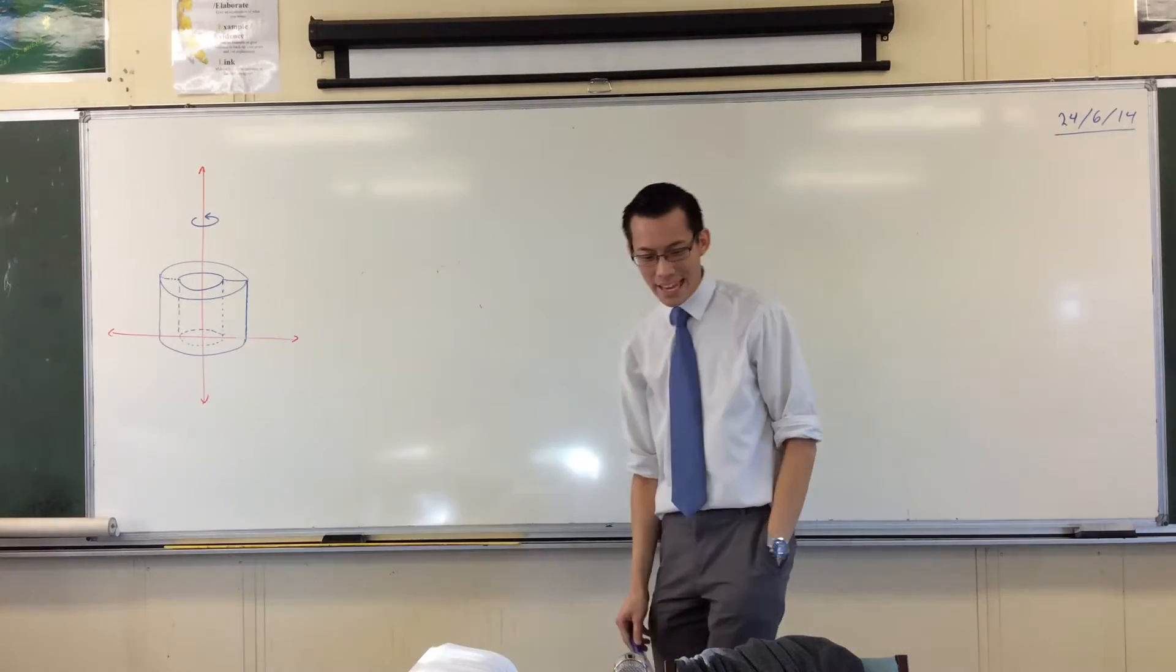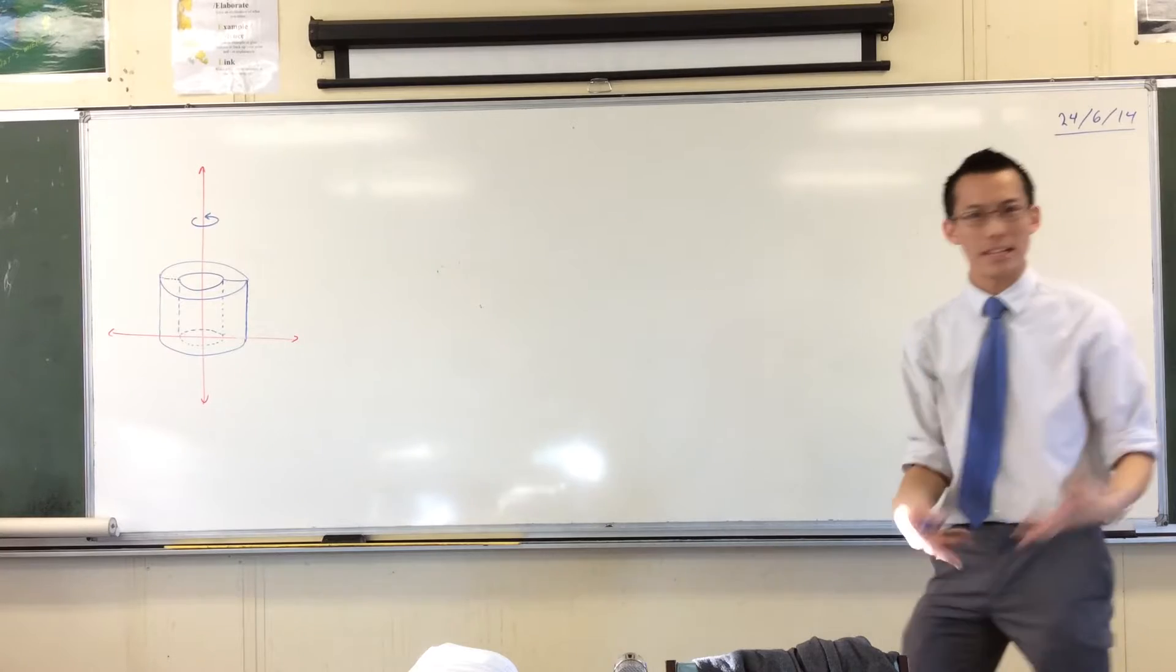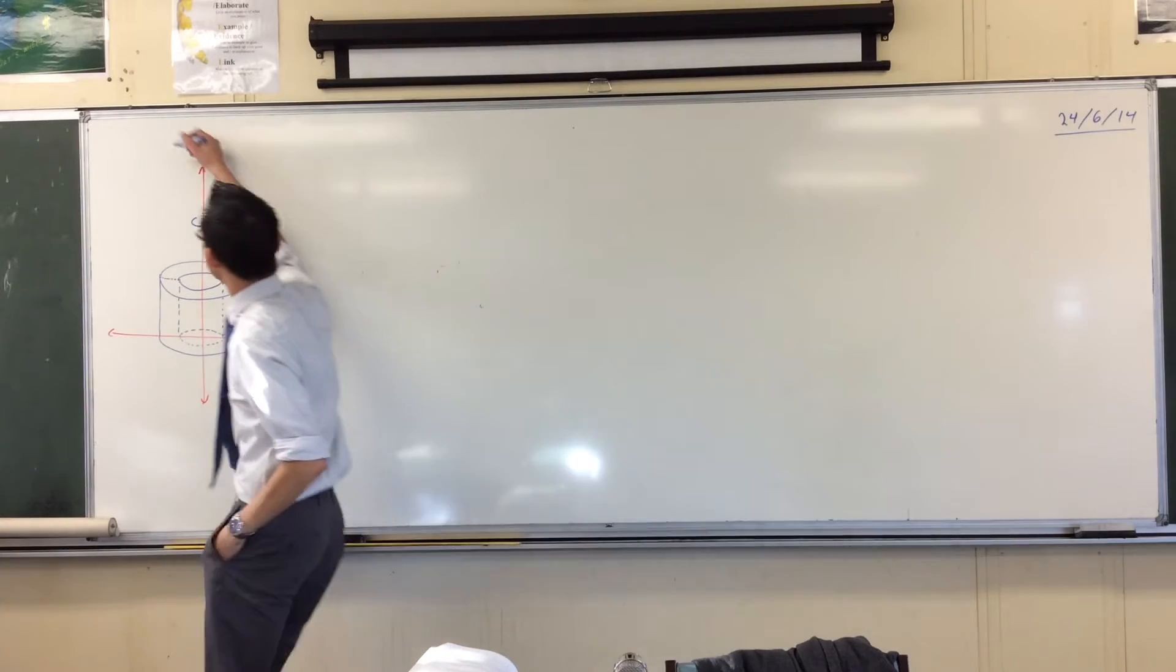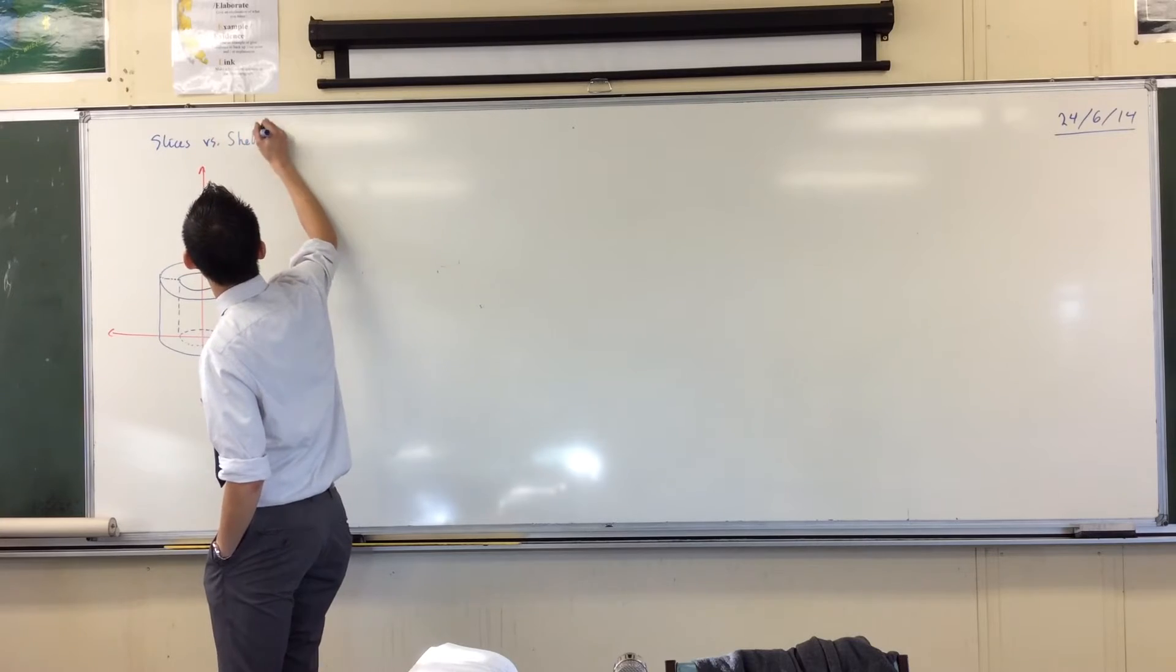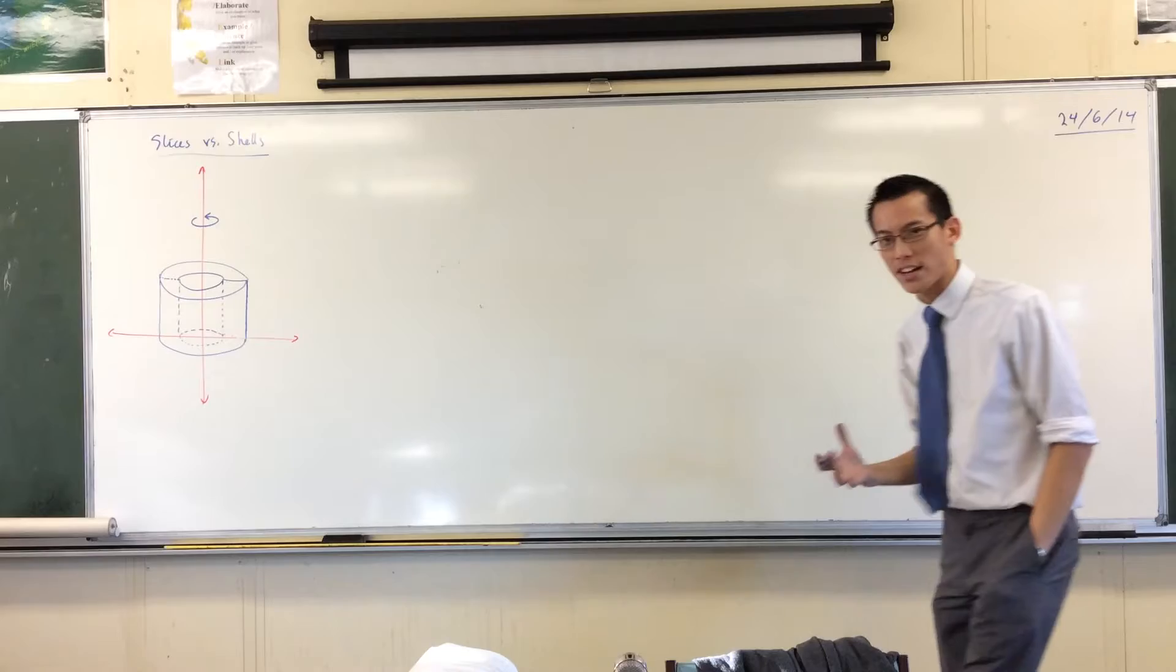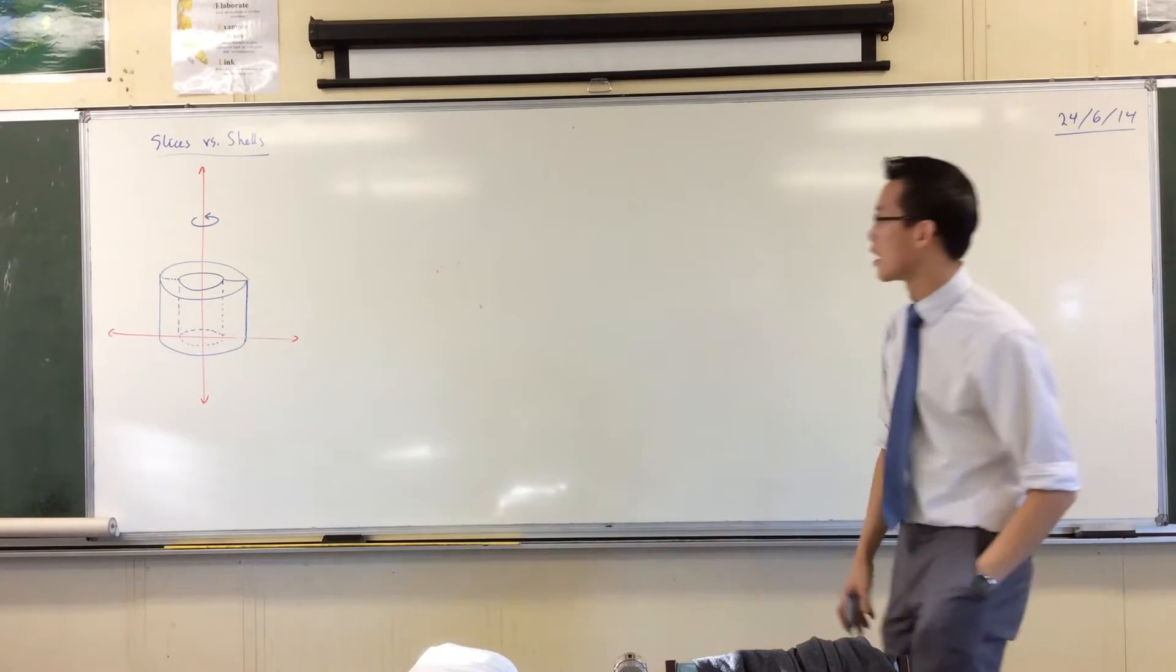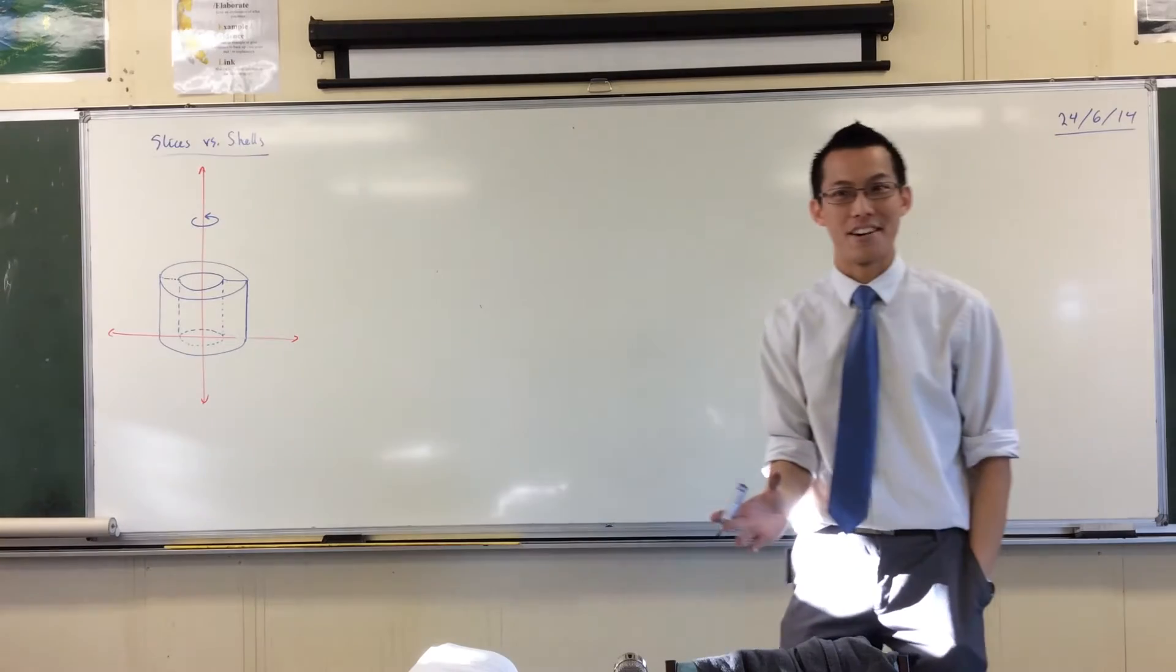So here is a diagram, but maybe you want to copy it. I particularly want to get the relationship between slices and shells. I want you to see it and be very comfortable with how the formulas for each one relate to each other. We've been doing this for a while now.